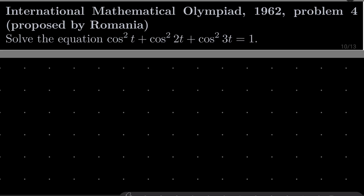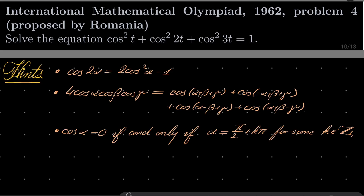This is a rather standard trigonometric equation, here are my hints. We'll make use of the following identities. The first one is well known: cosine of 2 times alpha equals 2 times cosine squared of alpha minus 1. The second one is trickier — it turns out that 4 times cosine(alpha) cosine(beta) cosine(gamma) equals cosine(alpha+beta+gamma) plus cosine(-alpha+beta+gamma) plus cosine(alpha-beta+gamma) plus cosine(alpha+beta-gamma). And finally, the well known fact that cosine of alpha is zero if and only if its argument is pi over 2 plus some multiple of pi.